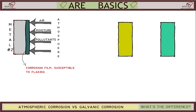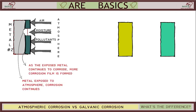This corrosive layer can fall off and expose the metal beneath. The exposed metal continues to react with the atmosphere to form more corrosive film.